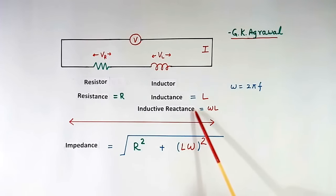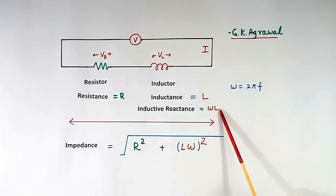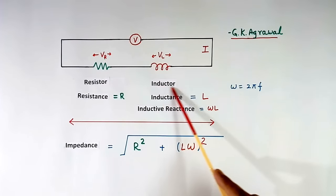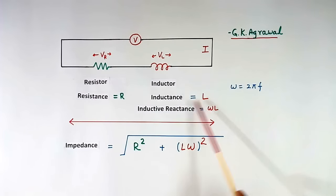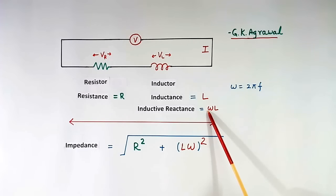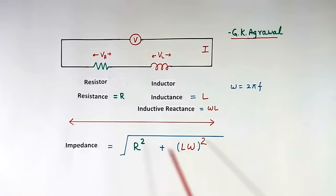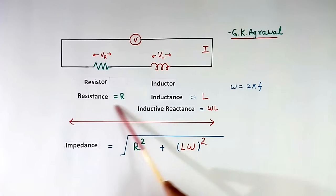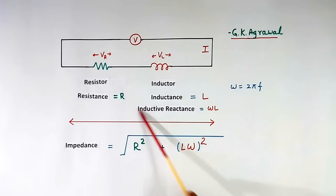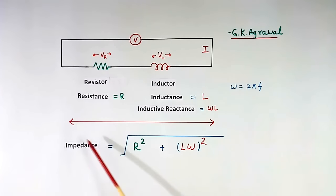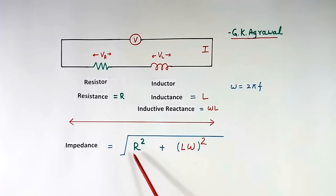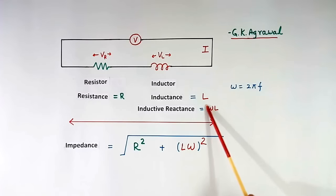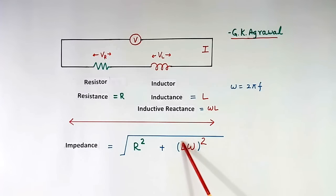Inductive reactance will be equal to ωL. The inductor has two values: one is inductance L, and another is inductive reactance ωL. Impedance is the total from one end to the other, and will be equal to √(R² + (ωL)²). Note that ωL and Lω are the same.